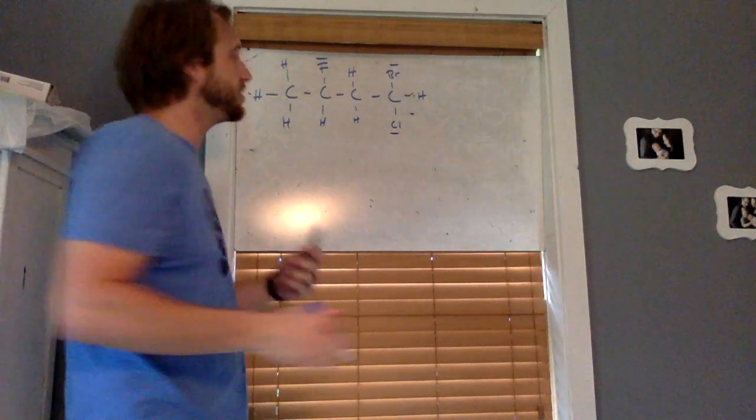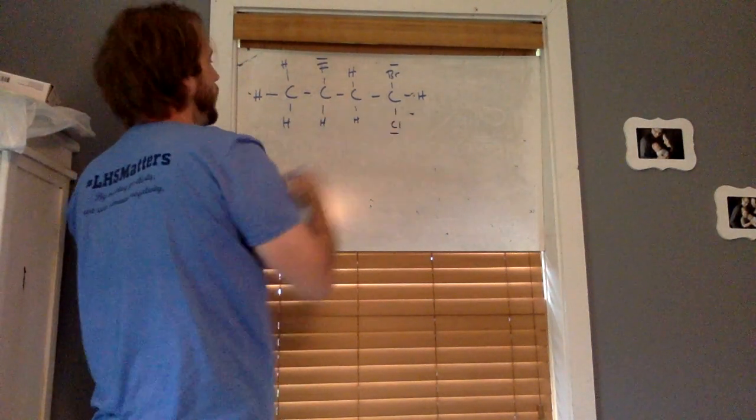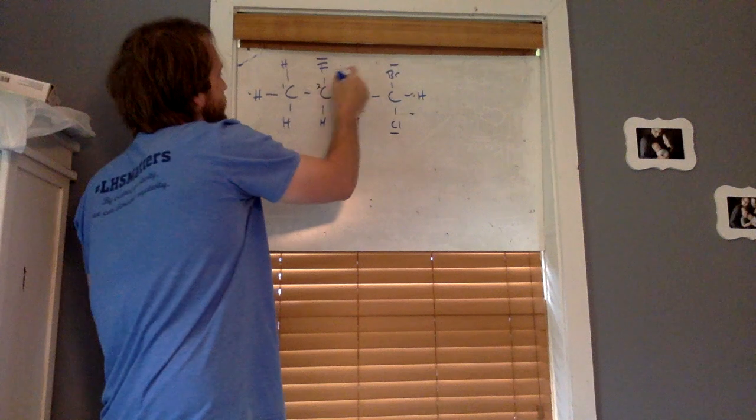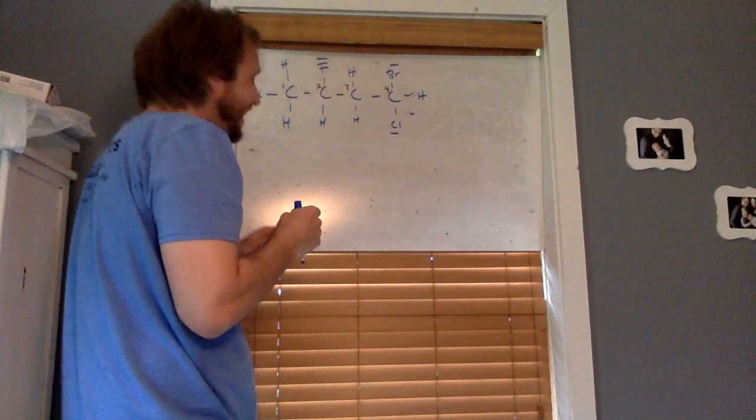So again, we start by finding our longest chain. We've got a one two three four carbon chain. So we know this got to be a butane for whatever our final name ends up being.